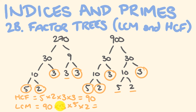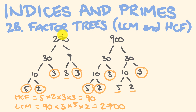90 times 3 is 270, and 5 times 2 is 10, so 270 times 10 is 2,700. That's the smallest number — the lowest common multiple — that both 270 and 900 go into. Not too bad, right? It's pretty easy. Anyway, we'll see you next time. Bye.